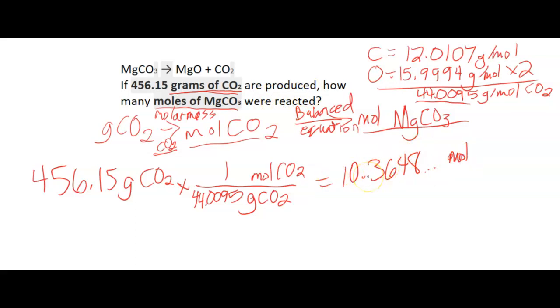I'm going to round to the proper number of significant figures. I have one, two, three, four, five here. One, two, three, four, five, six here. So I want to round to five significant figures. Two, three, four, five. So I have 10.365 moles of CO2.